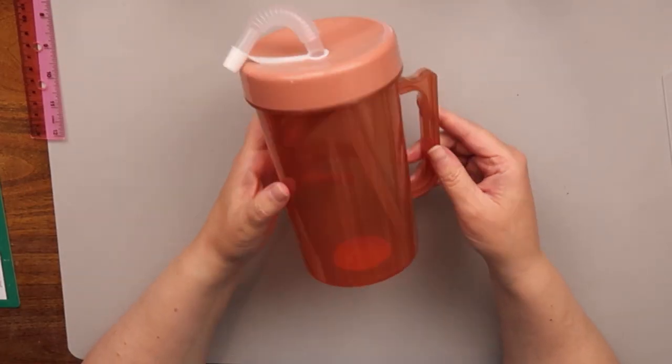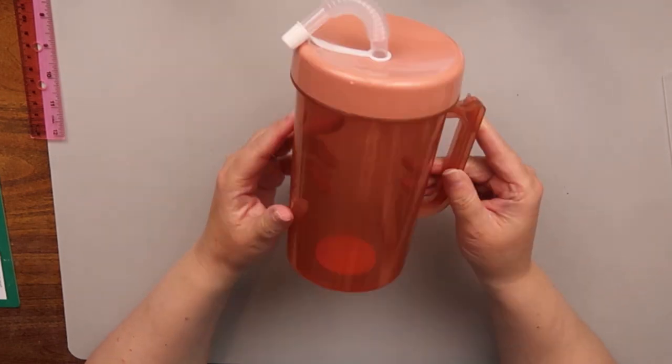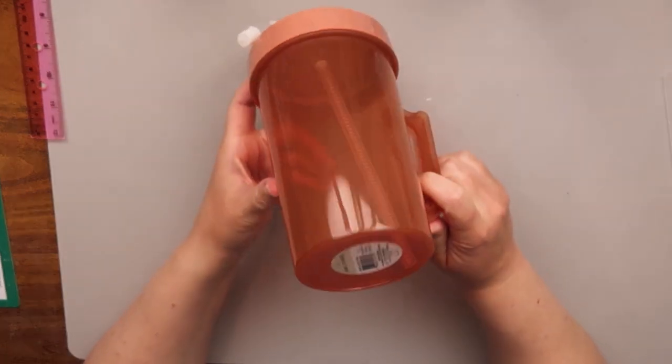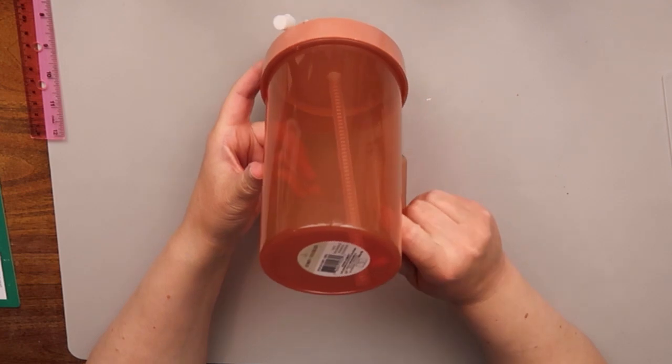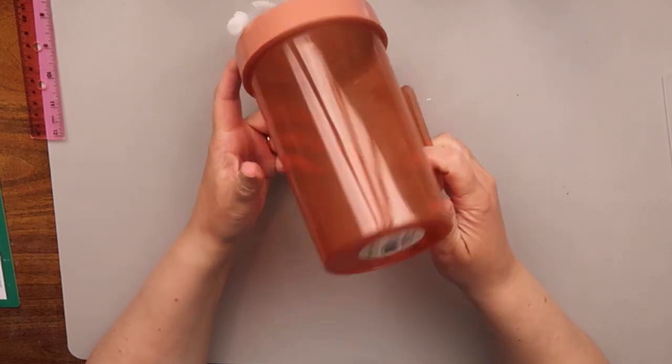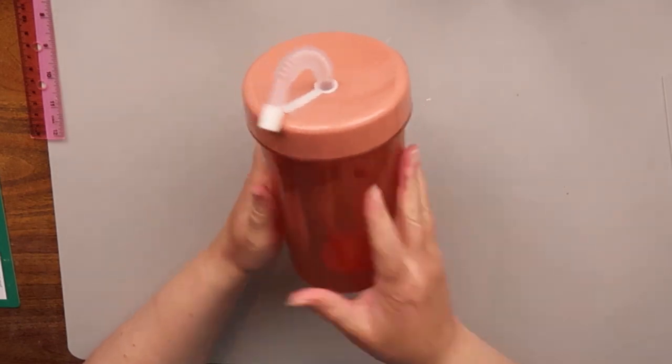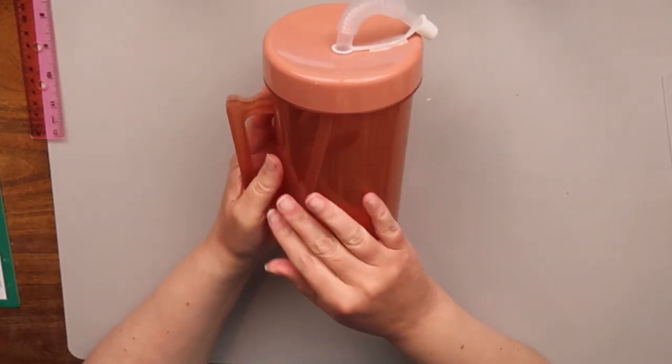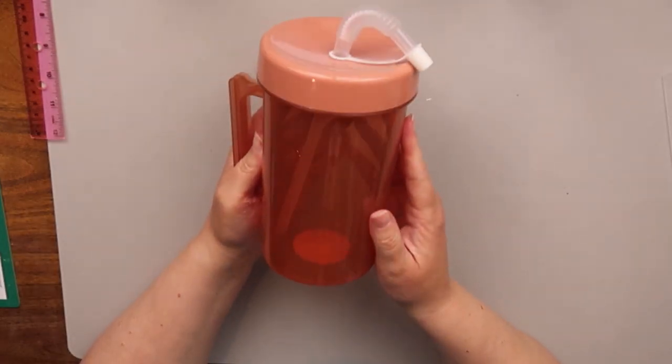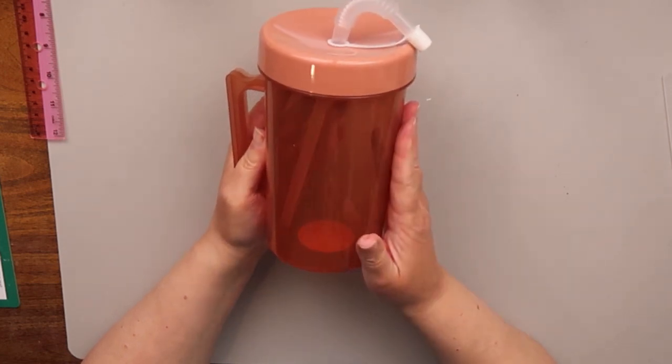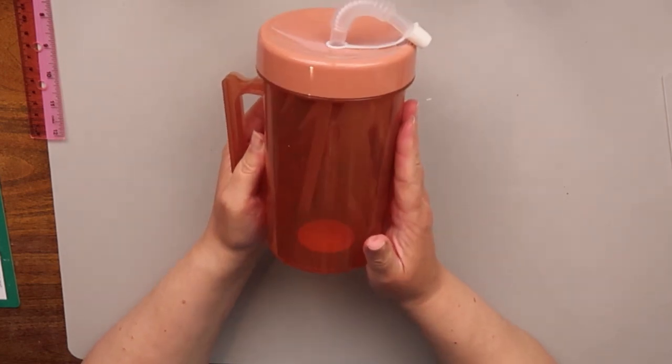The next thing that I have here is this water bottle. This also came from the Target Dollar Spot. This was $3 for this jumbo tumbler and it has a little straw. I looked at this and I looked at the color and I thought this might be just the thing for one of these transfers. So we are going to see if it works on this.